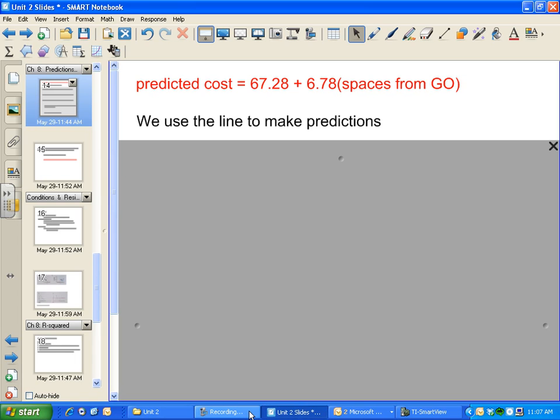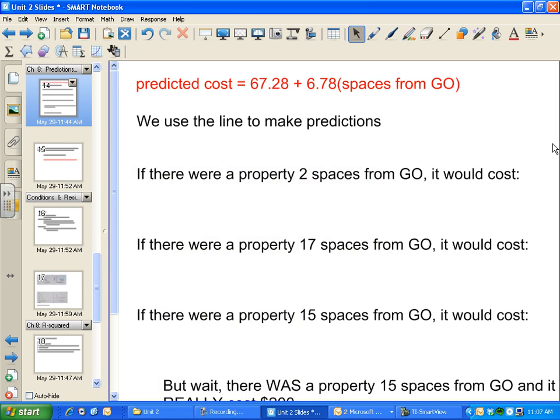All right, we're continuing with our Monopoly example. I want to show you some things we can do with this equation. We've looked at interpretations of the slope and y-intercept, and we can also use this line to make predictions about data or information.